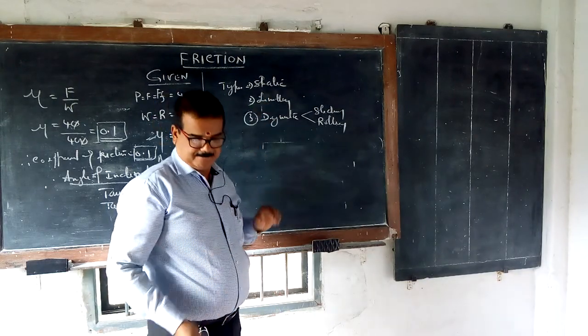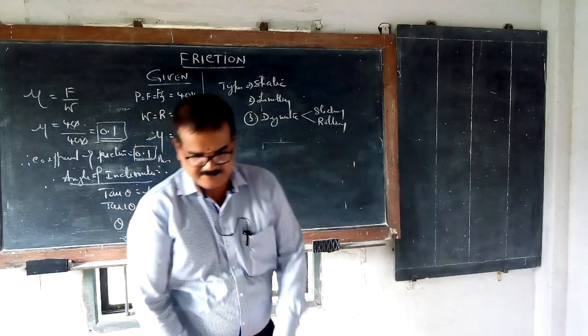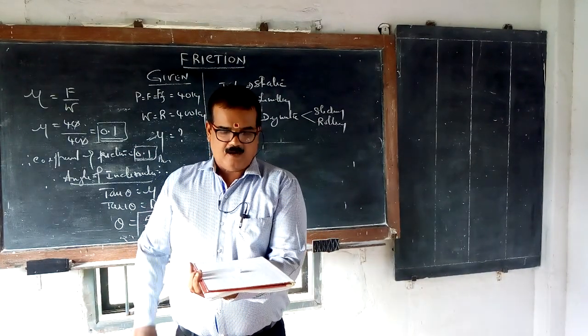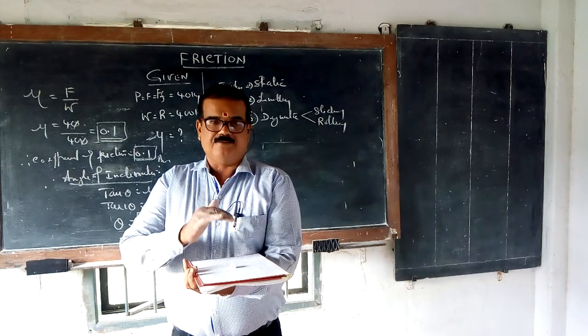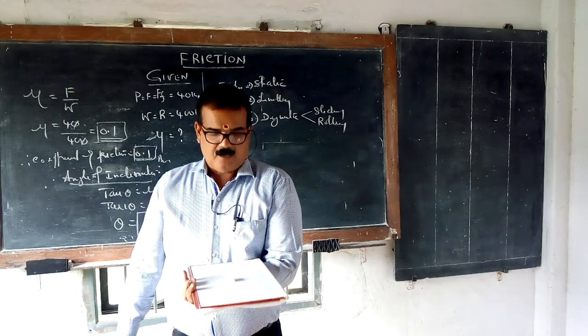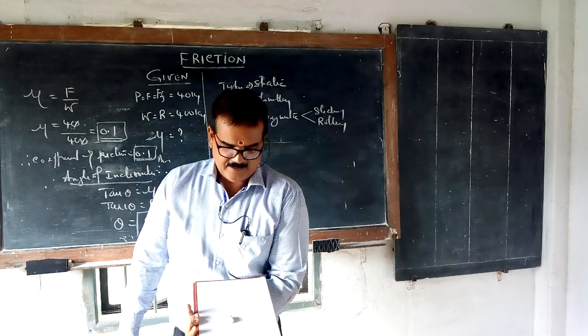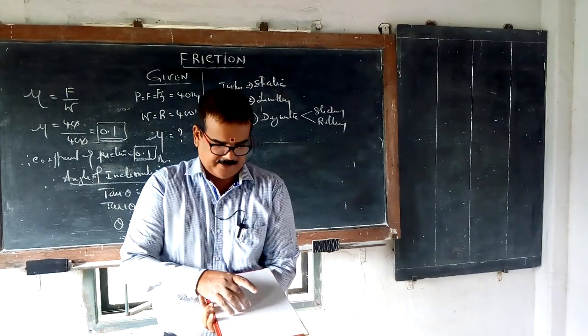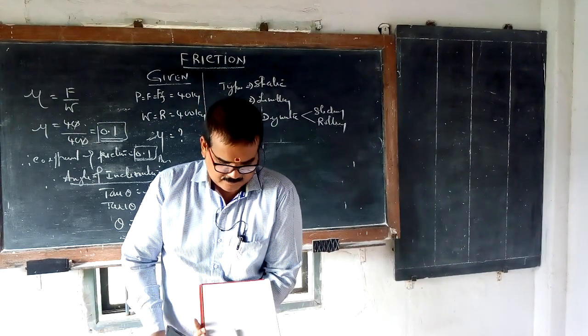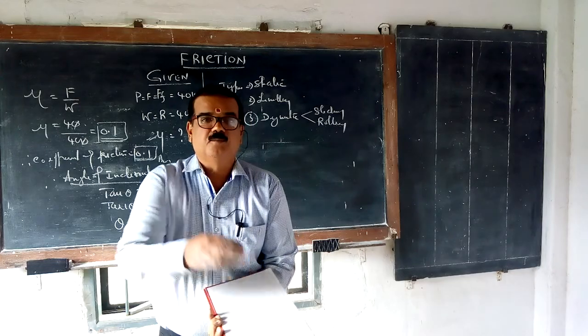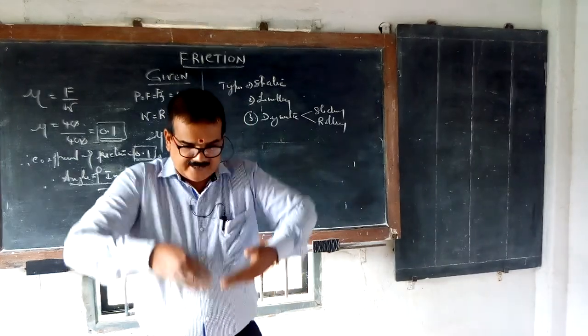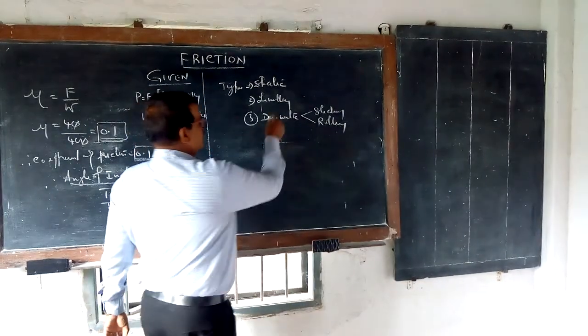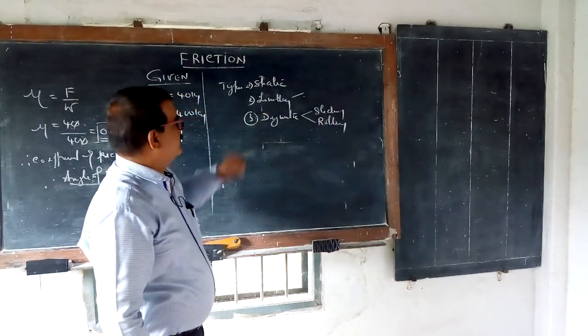Limiting friction means for example see this is the surface. Now it is a flat surface. Now object is there on the table. See it is about to move. Now when you increase the angle it is sliding.